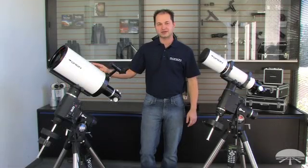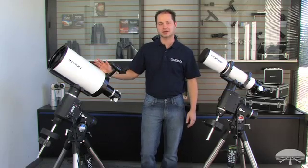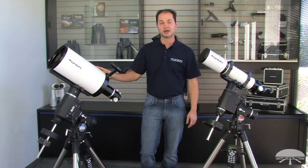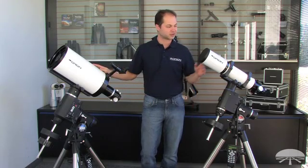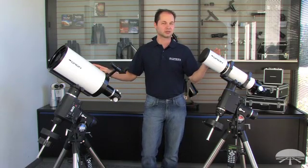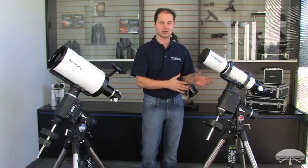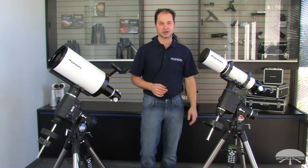Alright, so there we have it. This is the Sirius and the Atlas mount. Just keep in mind a few small considerations when you're deciding which one to buy. Mostly how much weight you want to carry with you, and how big of a scope you think you're going to be getting to put on top of it. If you're set with your telescope, you don't think you're ever going to be upgrading in the future, and it's below that 30 pound limit, then the Sirius is a great choice.